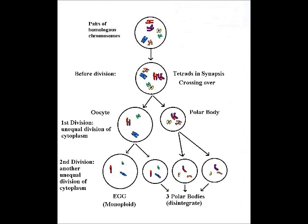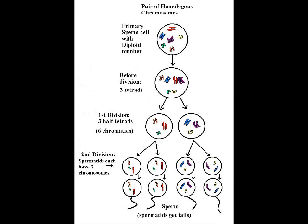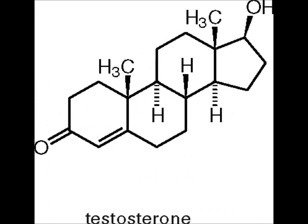Gametogenesis, or gamete production, consists of oogenesis in females and spermatogenesis in males. Meiosis generates one large egg in oogenesis, but four sperm in spermatogenesis. In humans, sperm develop continuously, whereas oocyte maturation is discontinuous and cyclic.